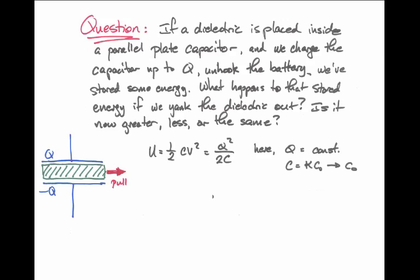While formerly we used to have a capacitance C, which is equal to kappa times some C₀, after we pull the dielectric out, we'll just have C₀. In other words, the capacitance will drop by some factor of kappa.